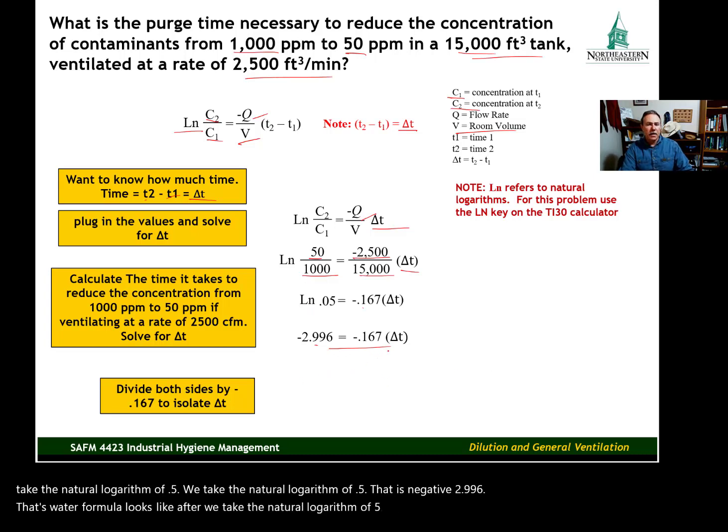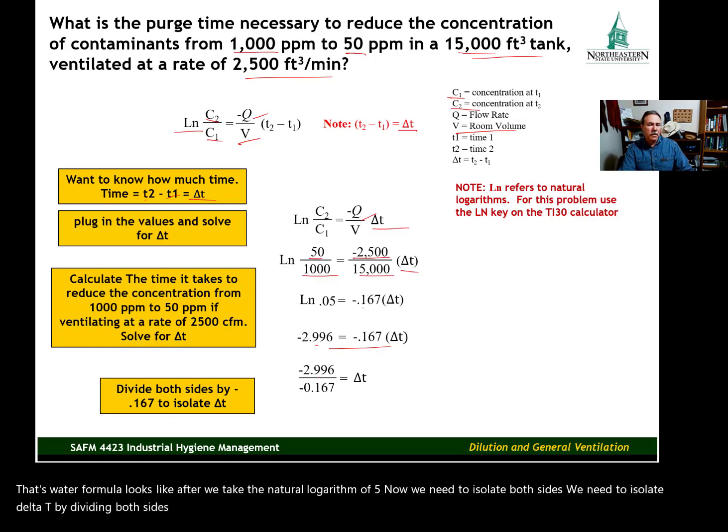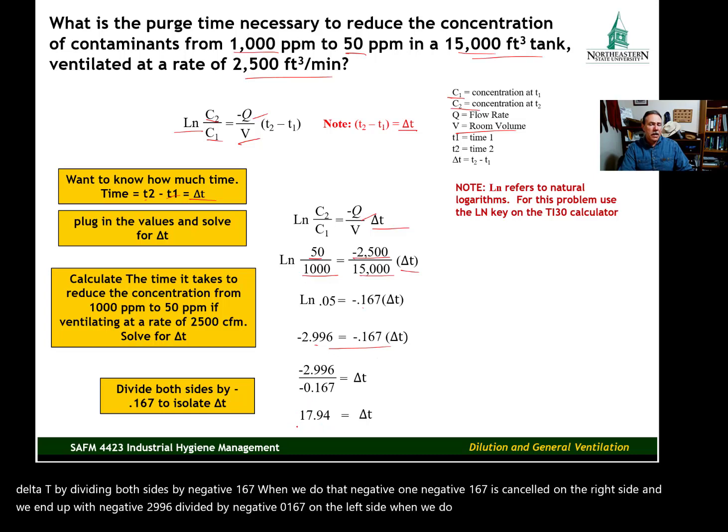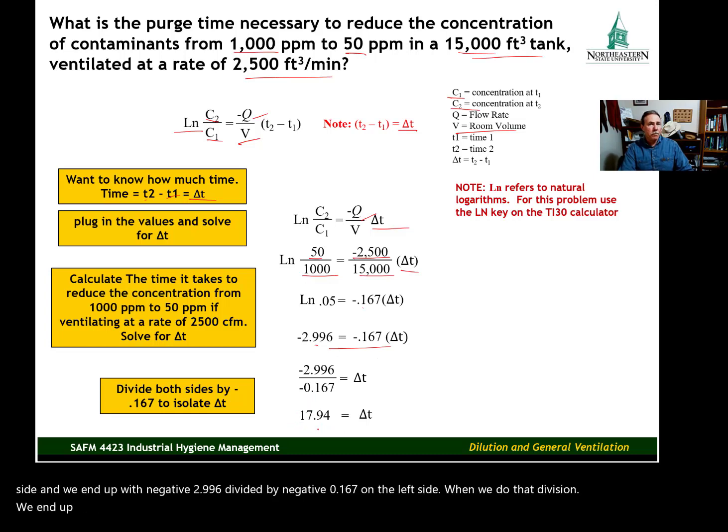Now we need to isolate delta T by dividing both sides by negative 0.167. When we do that, negative 0.167 is canceled on the right side. And we end up with negative 2.996 divided by negative 0.167 on the left side. When we do that division, we end up with 17.94 minutes.